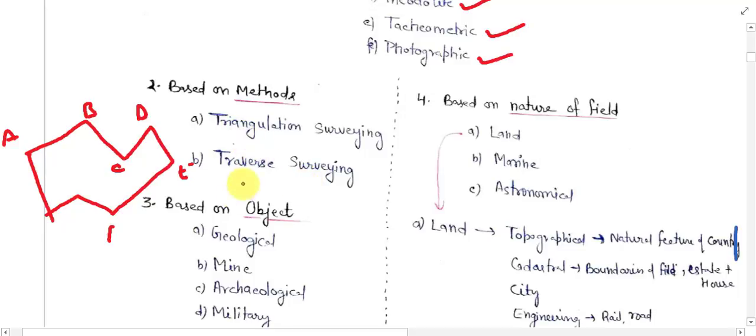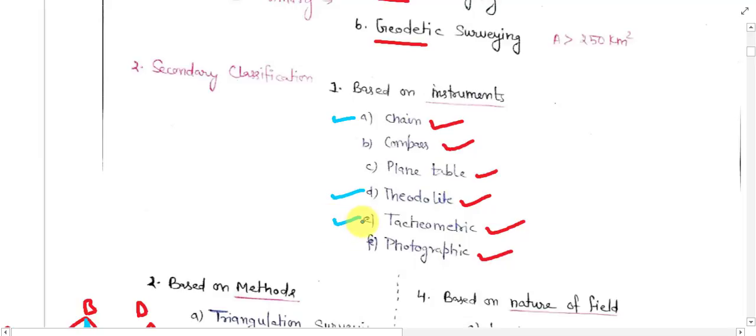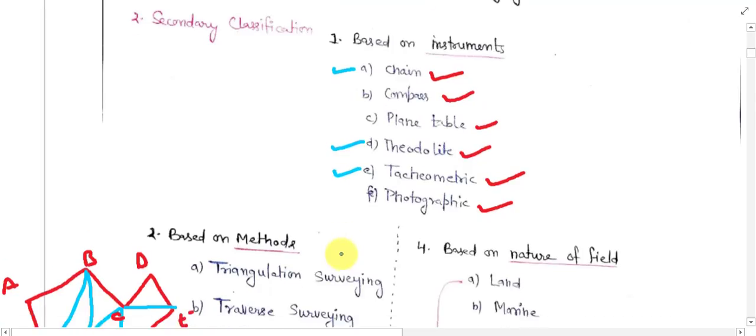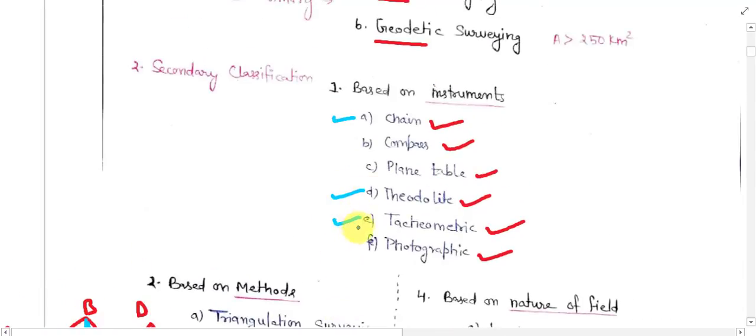In case of triangulation we convert our land area, suppose this is our land area, this is the outer boundary of land area, we convert this into number of small triangles. So these triangles are done with the help of chain, theodolite, and tachymetry. These are the instruments by which we convert our survey land into number of triangles.